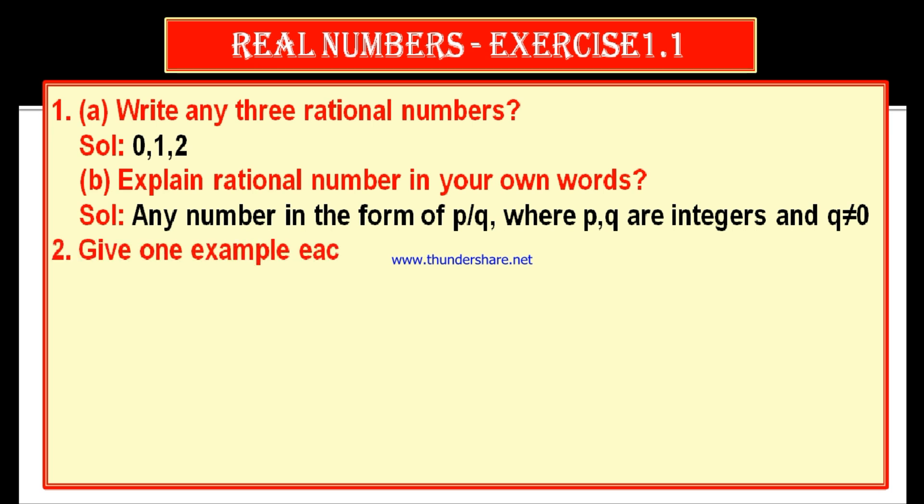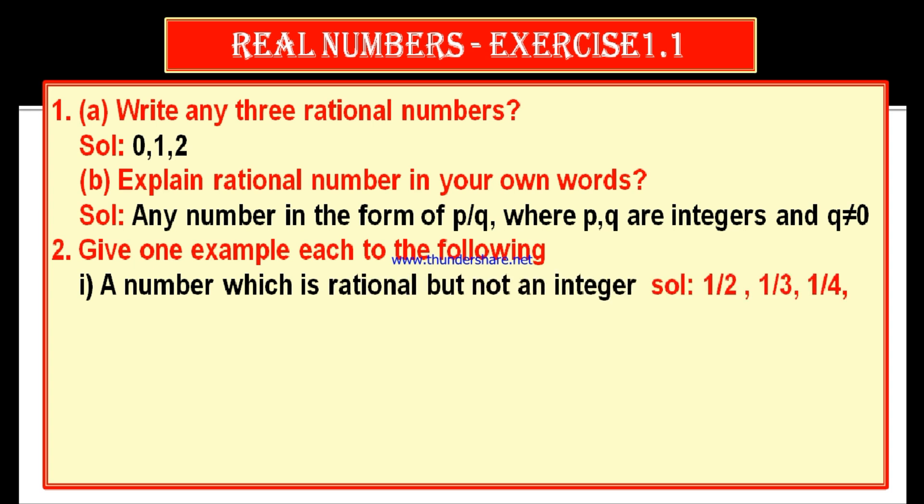Second question: give an example for each of the following. First bit — a number which is rational but not an integer. Integers range from minus infinity to infinity: minus 2, minus 1, 0, 1, 2, 3, 4 and so on. So we go for fractions: 1 by 2, 1 by 3, 1 by 4 — these are rational numbers but are not integers.